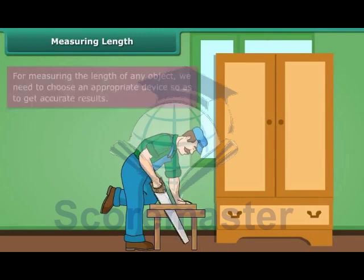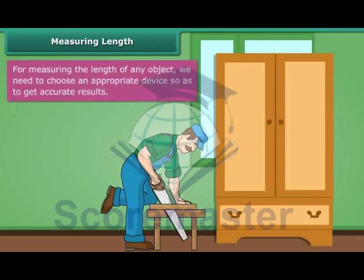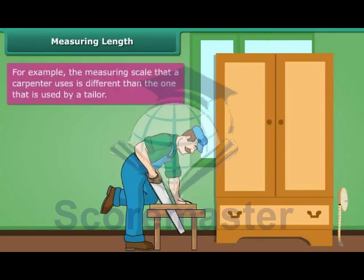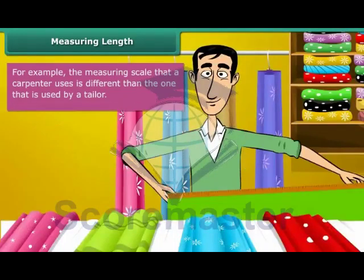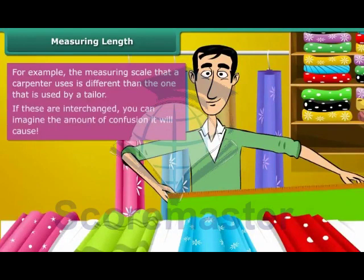Measuring Length. For measuring the length of any object, we need to choose an appropriate device so as to get accurate results. For example, the measuring scale that a carpenter uses is different than the one that is used by a tailor. If these are interchanged, you can imagine the amount of confusion it will cause.